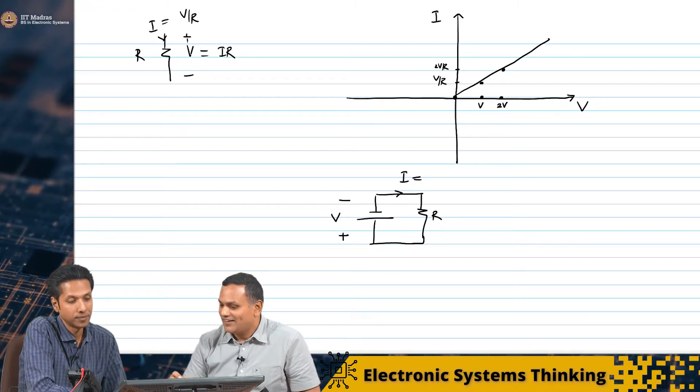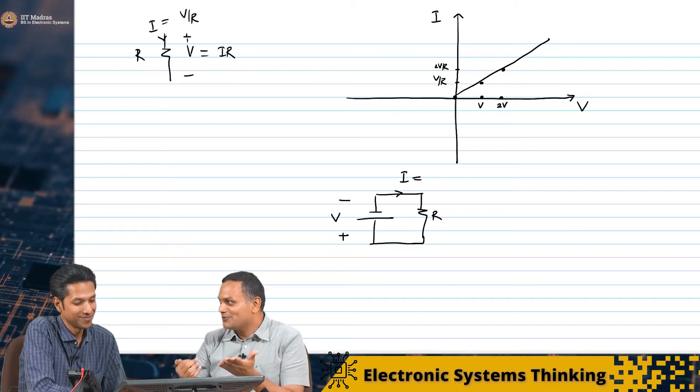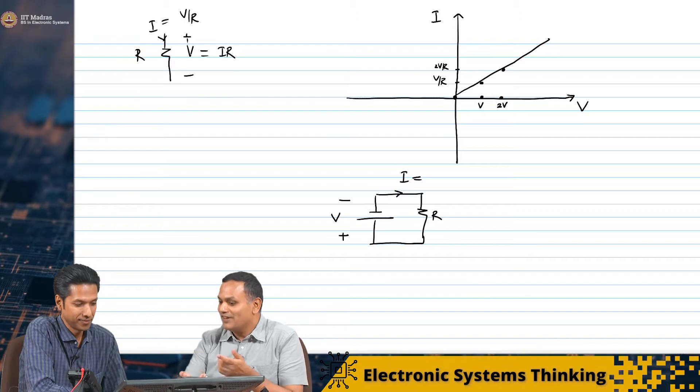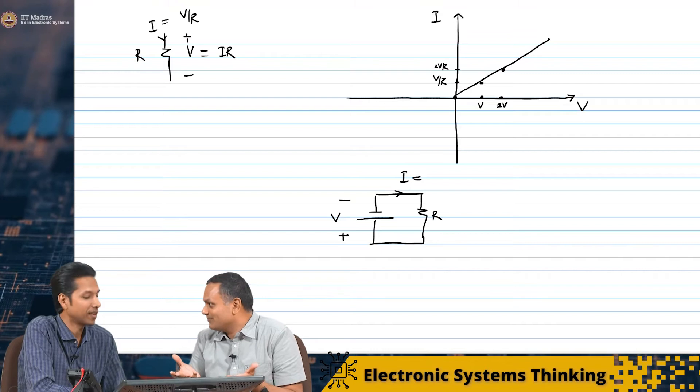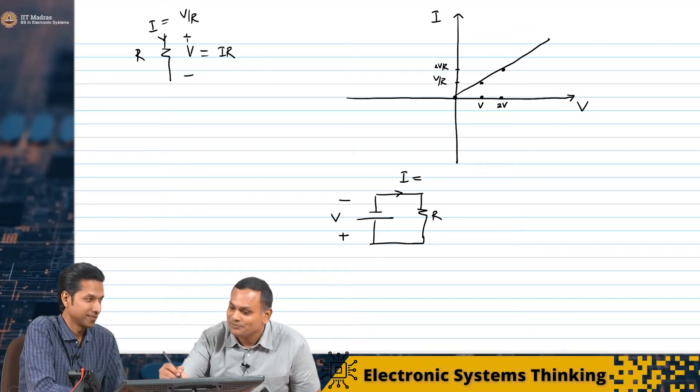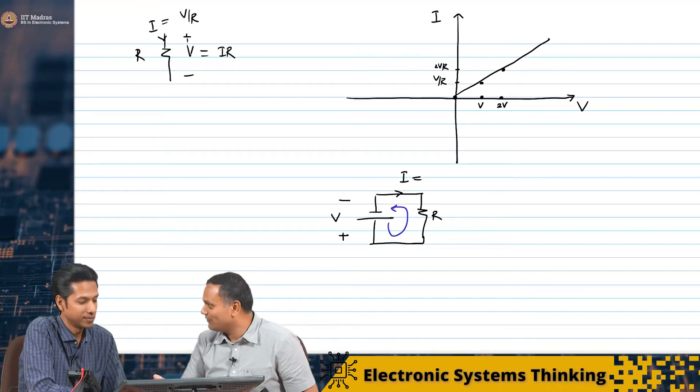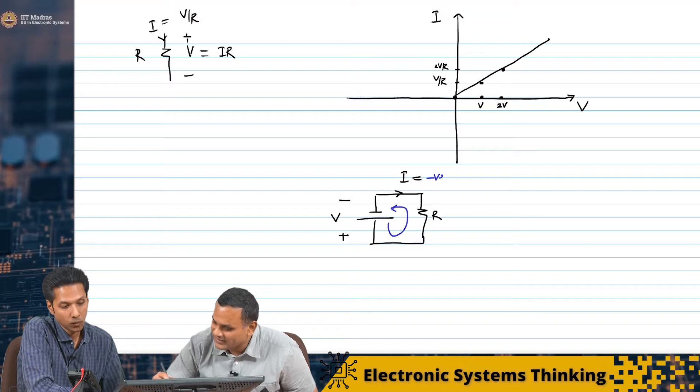We have always understood current only flowing from higher potential to lower potential. Now we're asking what is the current flowing from lower potential to higher potential? It will be a negative current. Actually current in the circuit will flow like this - positive current will flow like this, negative current will flow in the other direction. This is negative current.